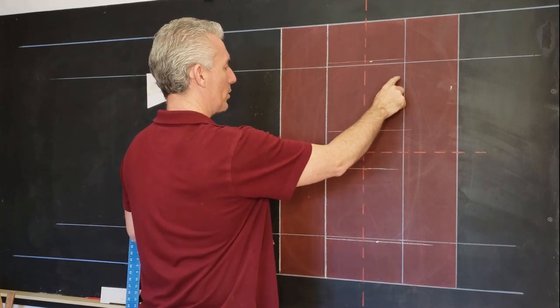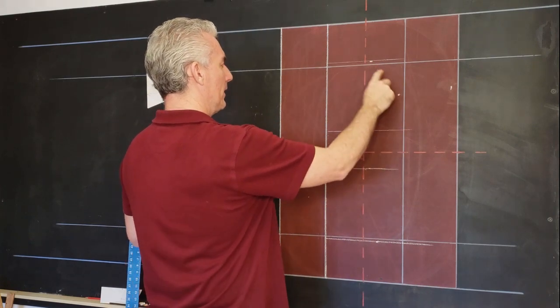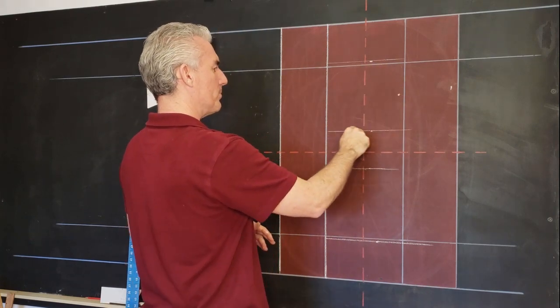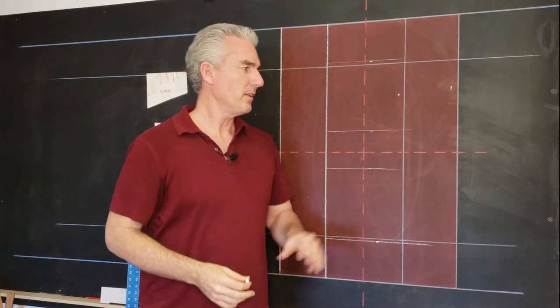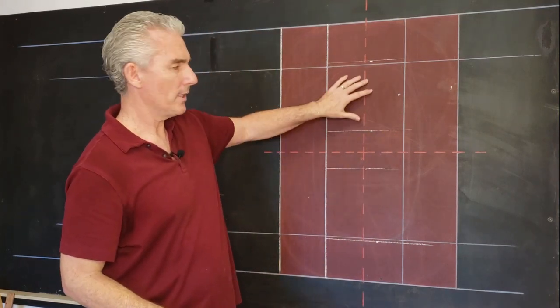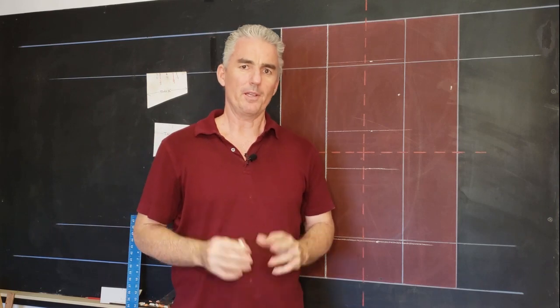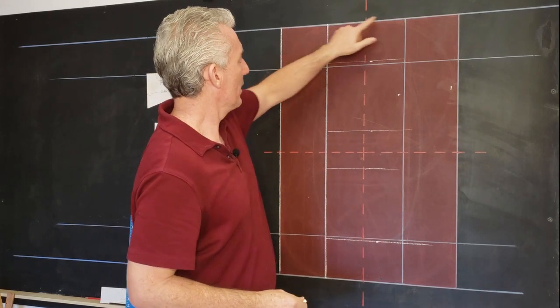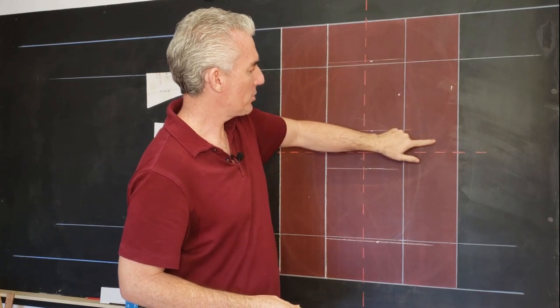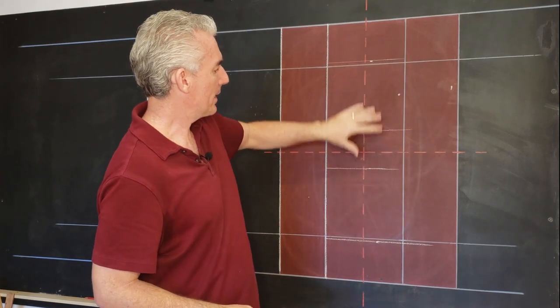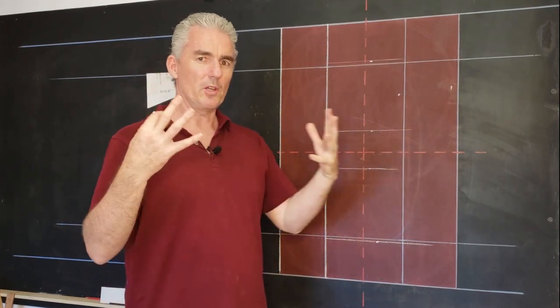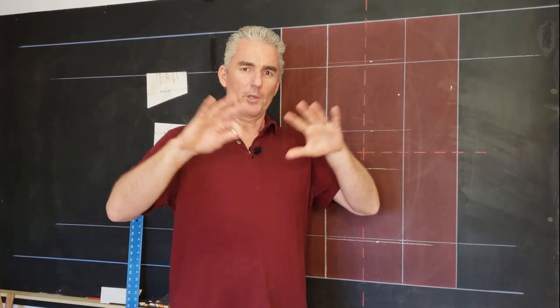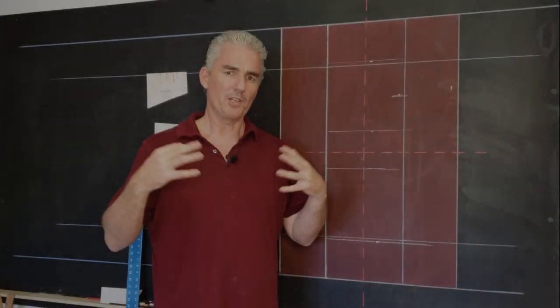Now, next thing I want to do is draw in the curve for this counter. And we draw the counter in first because the counter shape of a letter, like these holes in the middle, like the O and the B, that's actually the shape that your eye recognizes when you look at a letter. Your eye doesn't recognize this curve so much, but it really recognizes these counter shapes. Kind of like looking through a window, you'll recognize the shape of the window before you recognize the shape of the wall.